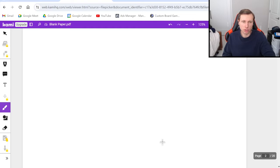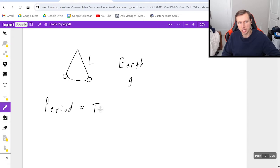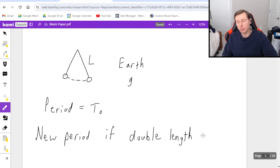Almost always the questions are going to look something like this. I have a pendulum swinging back and forth with some length L, and we're on Earth, which means the acceleration of gravity is G. I'm going to tell you the period. The period is equal to T naught. And what I'm going to do is I'm going to ask you, what's the new period if we double the length of the pendulum? So I usually call these comparison problems. It's because you're comparing the original scenario to a new scenario where we double the length.